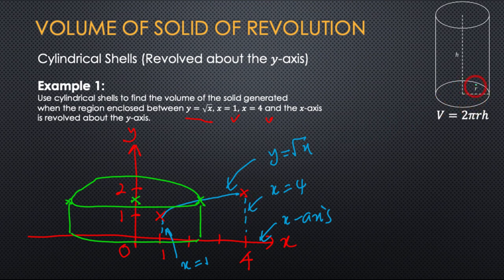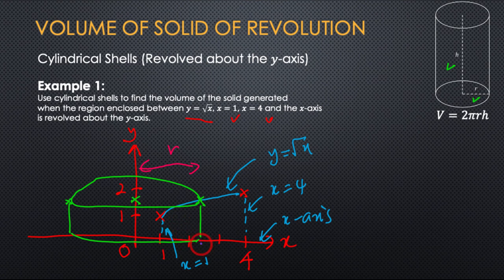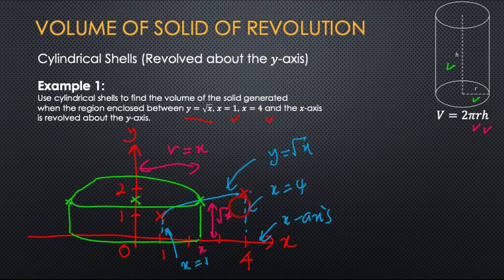What we need is the radius and the height. The radius is from the y-axis to the graph, so this is your r. Reading along the x-axis: x = 0, x = 1, x = 2 ... up to x, so the radius is x. For the height h in 2πrh: the height is measured from the x-axis to the function, so the function is y = √x — just copy the function.